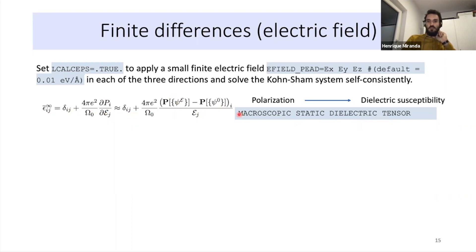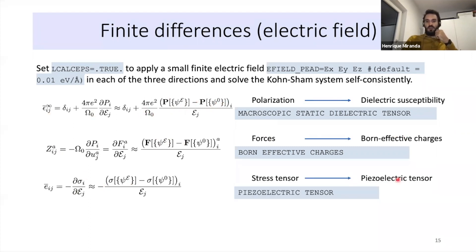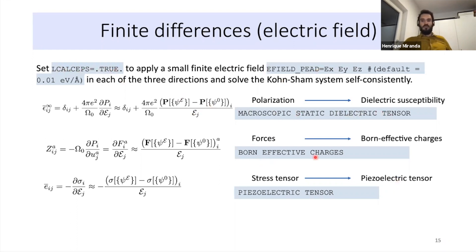Once the self-consistent calculations with the applied electric field are done, you compare orbitals with and without the field. Using finite differences — ΔP / ΔE — you obtain χ, the dielectric susceptibility, and from that the macroscopic static dielectric tensor. Similarly, forces give born effective charges, and the stress tensor gives the piezoelectric tensor. Setting LCALCEPS = .TRUE. in VASP handles all three field directions and writes the macroscopic static dielectric tensor, born effective charges, and piezoelectric tensor to the OUTCAR file.